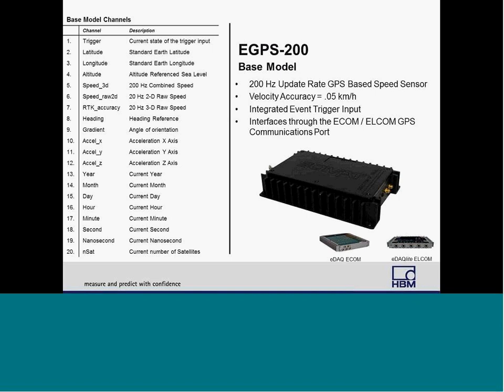The eGPS 200 is available in both a base model and a plus package. The base model provides 22 possible channels, including speed, absolute position, three-axis instantaneous acceleration, number of satellites, and date and time information. The base model also includes an input trigger channel, which allows synchronization of data values with external events, such as brake pedal depression or passing an event marker.